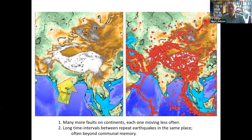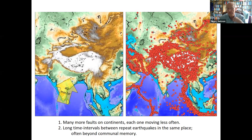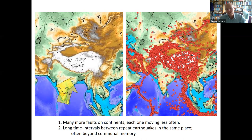A consequence is that there are more faults on continents than in oceans, and each one moves less often. If you're in Japan, on the edge of South America, or in the middle of the Indian Ocean, that fault doing the job has to move frequently — earthquakes are not a surprise. But in Asia, because each fault contributes only a little, it doesn't have to move very often. The previous earthquake in one place might be well beyond local memory, perhaps thousands of years ago — and that's one of the key problems.